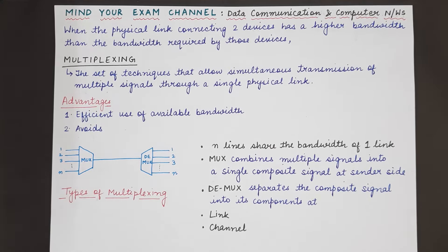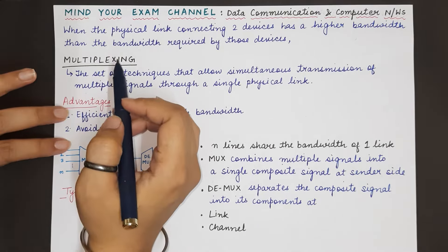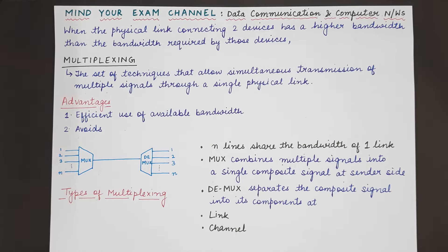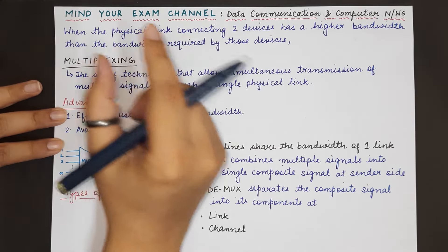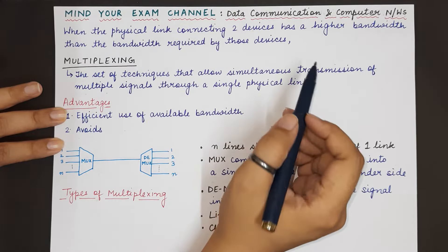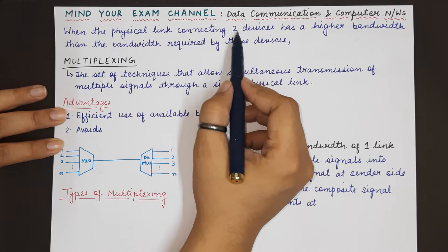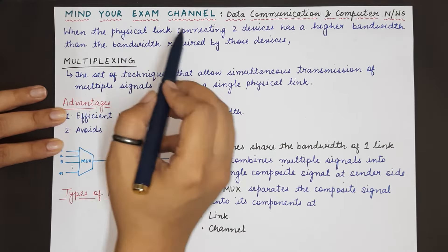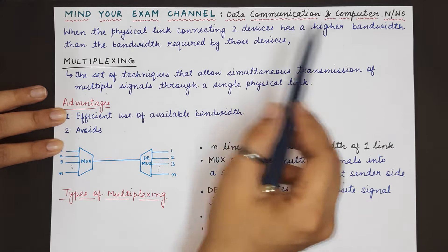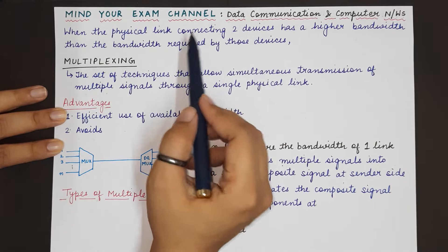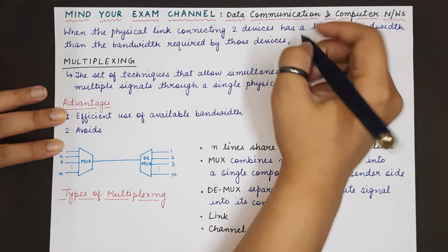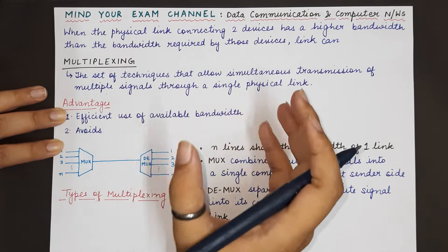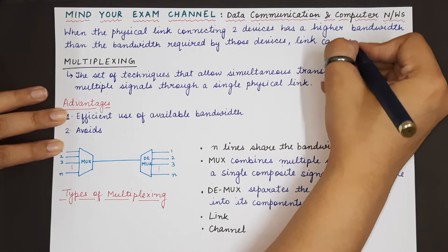Hello everyone, welcome back to my channel Mind Your Exam. In this video we will be starting with the topic of multiplexing. Before understanding multiplexing, we must understand why there is a need for multiplexing. Generally, we have a physical link — the transmission medium — through which we transmit data. But sometimes the transmission link connecting two devices has a higher bandwidth than what those devices actually need, so the link can be shared between other devices as well.